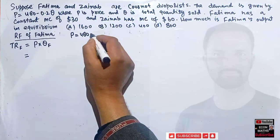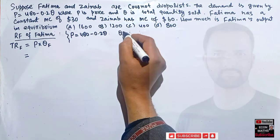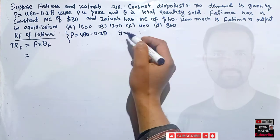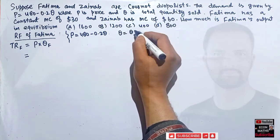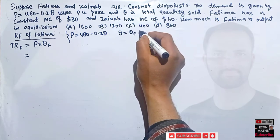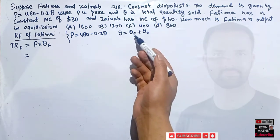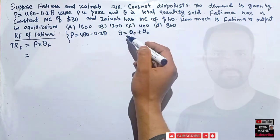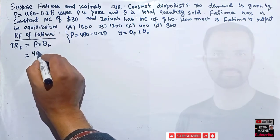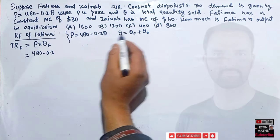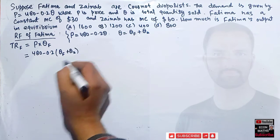The inverse demand function is P = 480 minus 0.2Q, where Q is total output produced by both firms. So Q equals Qf plus Qz, using subscripts for Fatima and Zeynab. Substituting into the total revenue expression, we replace P with 480 minus 0.2 times (Qf plus Qz), then multiply through by Qf.